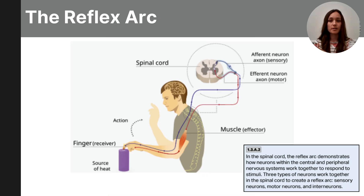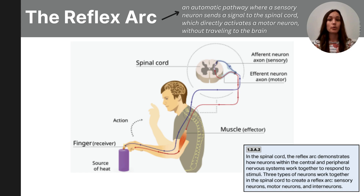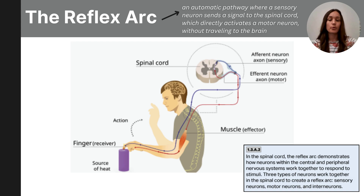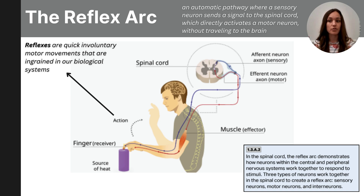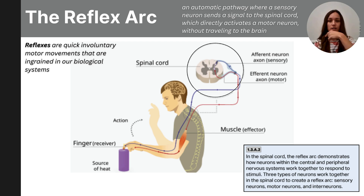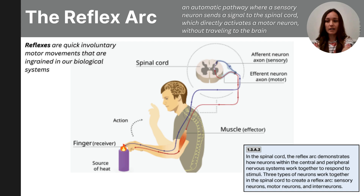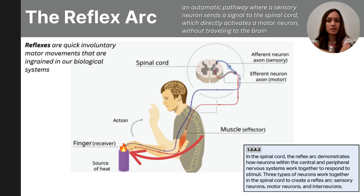As we learn about the pathway from sensory neurons to interneurons and out to motor neurons, it's important to know the reflex arc. The reflex arc is a situation where a message goes from the sensory neurons to the interneurons in the spinal column and loops right back out to the motor neurons without going all the way up to the brain. Reflexes are quick, involuntary motor movements ingrained in our biological systems. For example, if you touch something hot, the sensory neurons pick that up, send it to the interneurons in the spine, and it loops back out to the motor neurons with an almost instantaneous response that pulls your hand away from the harmful stimulus.